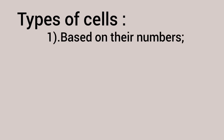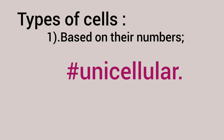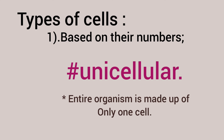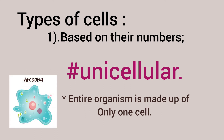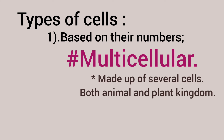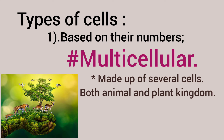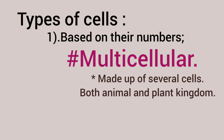Next, types of cells. First, based on their numbers, cells are classified as unicellular and multicellular. Unicellular organisms are made up of only one cell — the entire organism is one cell. Examples: amoeba, paramecium, euglena. Multicellular organisms are made up of several cells. Examples include both the animal and plant kingdoms — all human beings are multicellular.